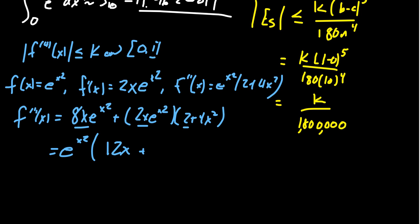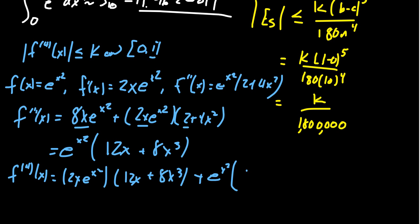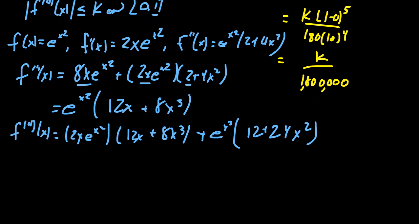And then there is an 8x cubed as our third derivative. And then for the fourth derivative, we've got to do this one more time. Again, by the product rule, the derivative of e to the x squared is 2x e to the x squared times by the polynomial 12x plus 8x cubed. For the second one, we'll get an e to the x squared, and then the derivative is 12 plus 24x squared. We could factor out the e to the x squared. I guess we'll just do that.